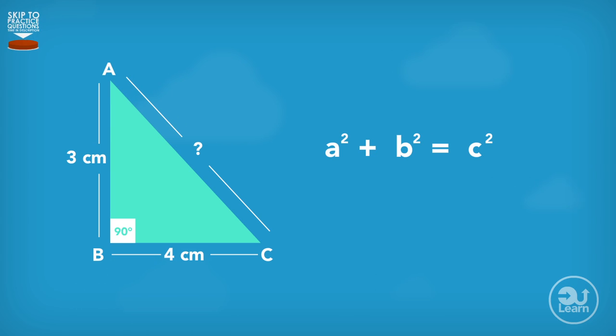Next is to rearrange the formula to make C the subject. To do that, we square root both sides. This will leave the formula looking like this. Next, we plug in the values into the formula. We now have the square root of 3 squared plus 4 squared, which is equal to an unknown value of C.